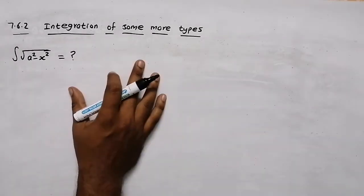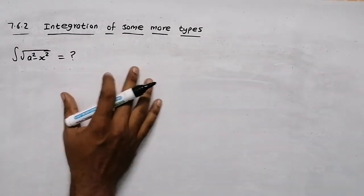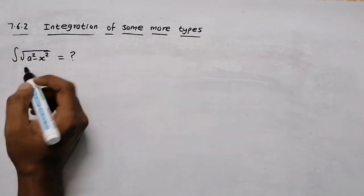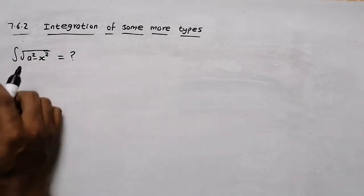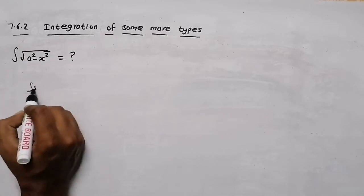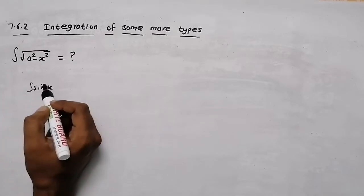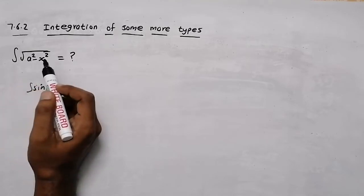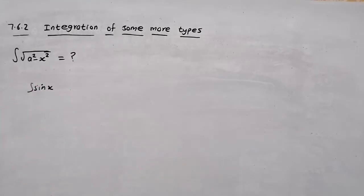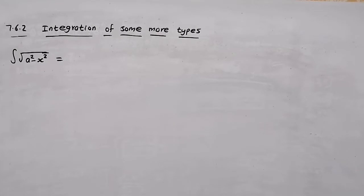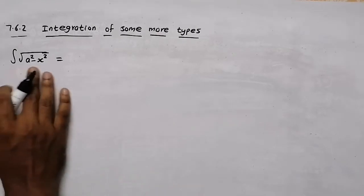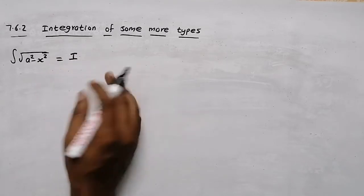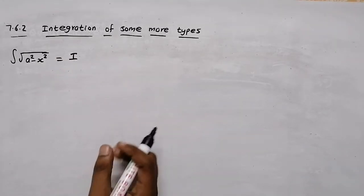Here we are going to talk about the integration of some more types in the textbook, page number 328, in the 7.62 section. Now we are going to talk about integration. If you have a function, you can integrate it. Now we have to give you a question.